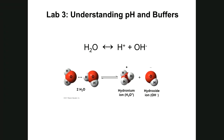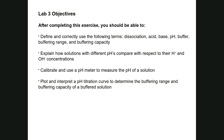Hello everyone. This is the Lab 3 overview. Lab 3 is titled 'Understanding pH and Buffers.' The objectives are to define and correctly use terms such as dissociation, acid-base, pH, buffer, buffering range, and buffering capacity. You'll also explain how solutions with different pH values compare with respect to their proton and hydroxide ion concentrations, calibrate and use a pH meter, and interpret a pH titration curve to determine buffering range and buffering capacity.